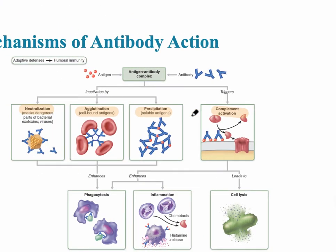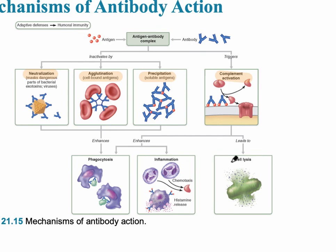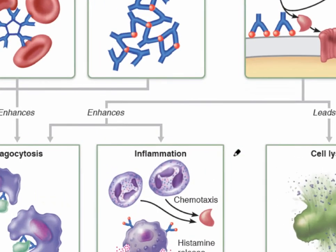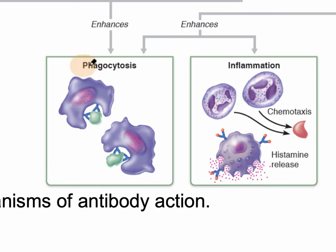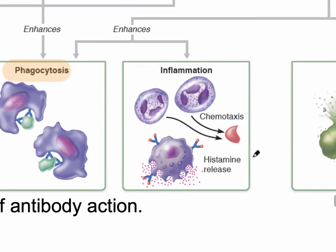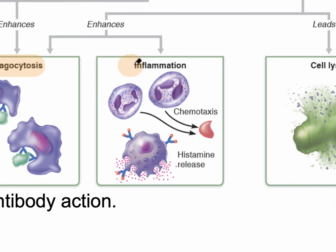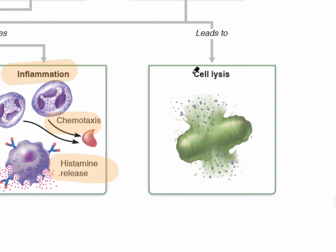This leads to cell lysis as well as phagocytosis — we can see phagocytosis, or cell eating, occurring here, where the cell can now destroy the virus that has been identified through agglutination and precipitation. The phagocyte can eat and destroy that antigen. Inflammation can also happen — again, a second line of defense — where chemotaxis occurs, histamine is released, and vasodilators are released from basophils and mast cells. Finally, this can lead to cell lysis and destruction of the cell.